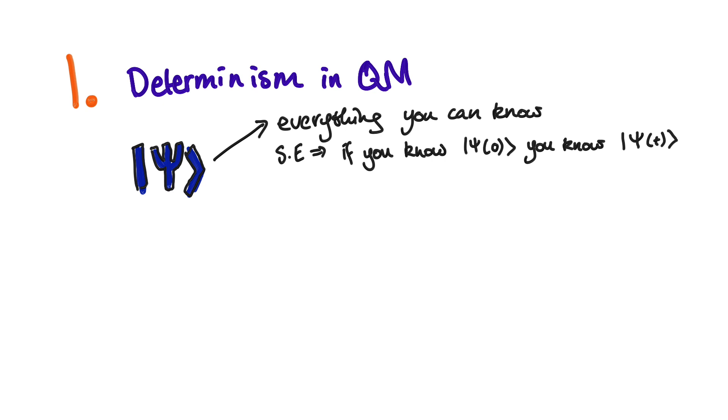The state of a particle, not just what you know about the state but the actual state, is determined in the future provided that you don't make a measurement. That simply is the definition of determinism, and so in this view, quantum mechanics is deterministic up to the point of measurement.